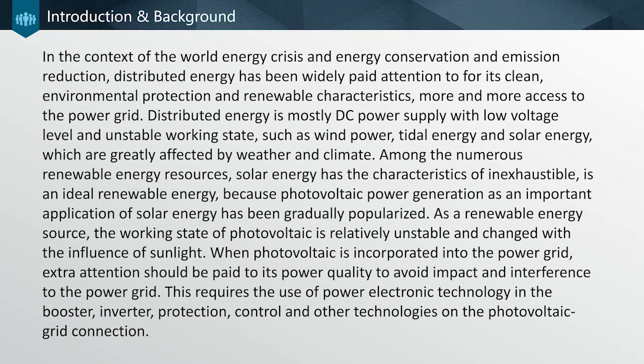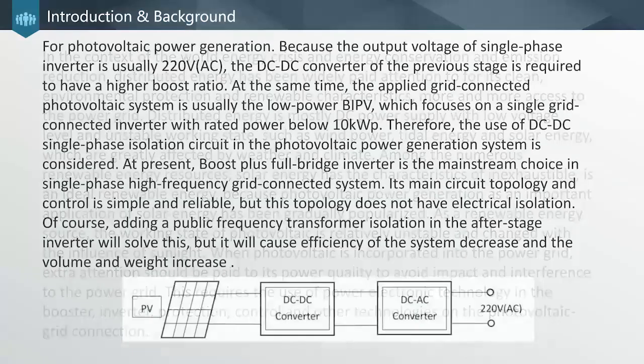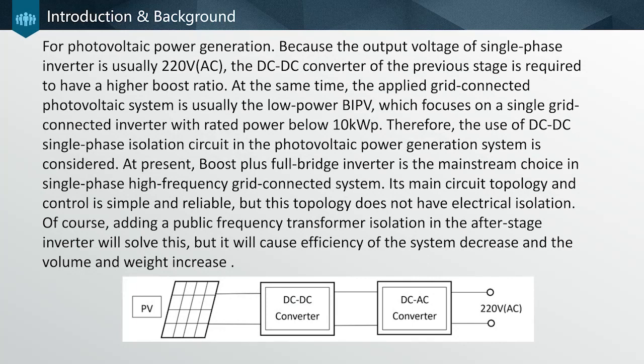When PV is incorporated into the power grid, extra attention should be paid to power quality to avoid impact and interference to the grid. This requires the use of power electronics technology in the booster, inverter, and control for PV grid connection. Because the output voltage of a single-phase inverter is usually 220V AC, the DC-DC converter as the previous stage requires a higher boost ratio. The applied grid-connected PV system is usually a low-voltage BIPV system focusing on single grid connection with rated power below 10kW, so the use of a DC-DC single-phase isolation circuit in PV power generation systems is considered. At present, the boost plus full-bridge inverter is the mainstream choice in single-phase high-frequency grid-connected systems, with simple and reliable main circuit topology and control.